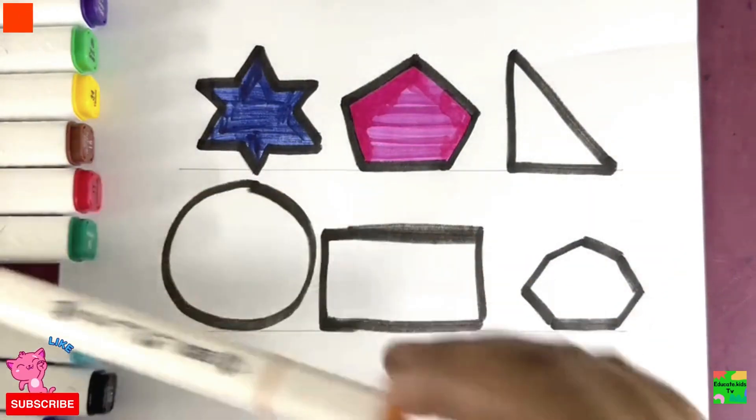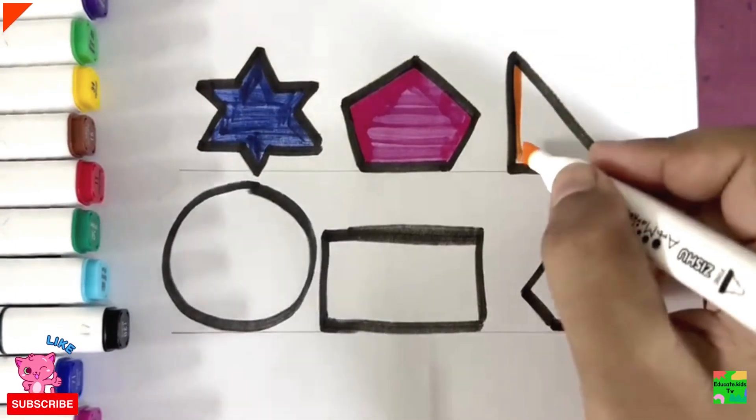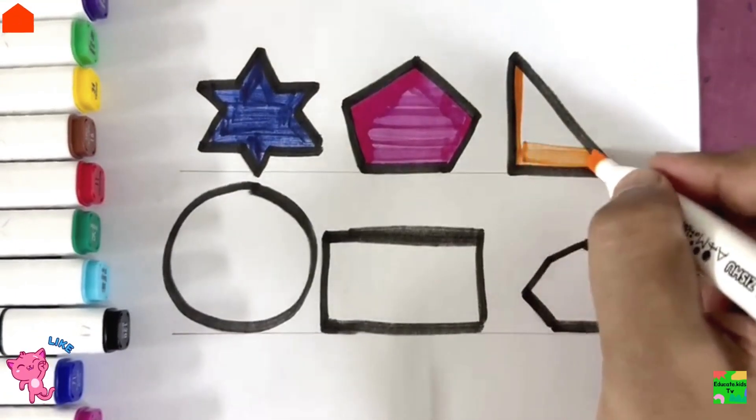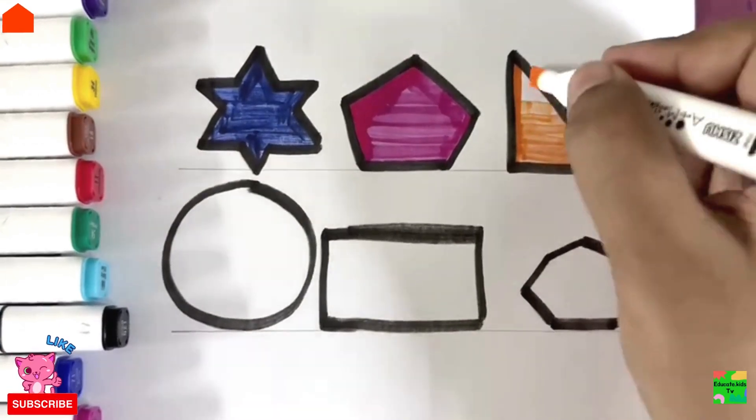Now orange color. I'll color the right-angled triangle with orange. Right-angle triangle. Hooray!